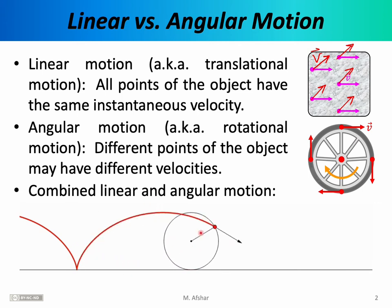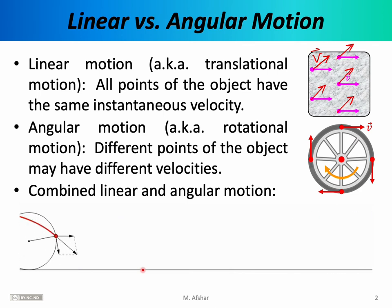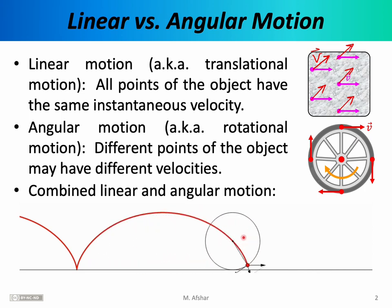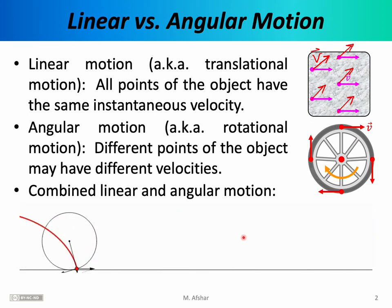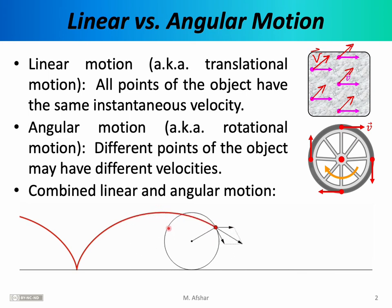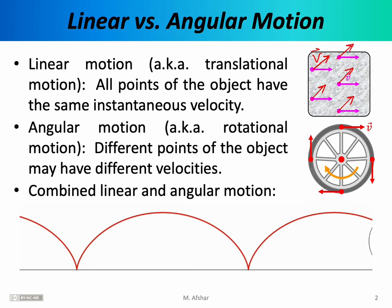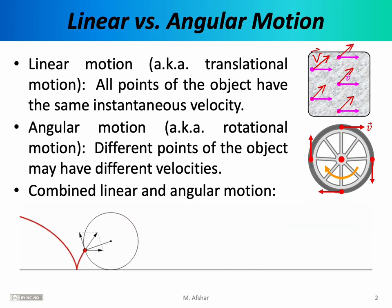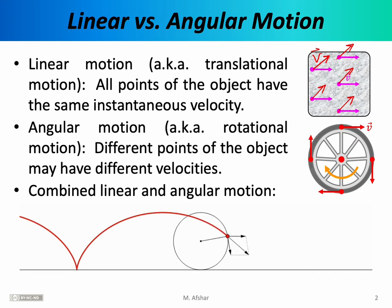To better understand the behavior of the velocity vector, we can decompose it into two components. We can say that the motion of this wheel consists of linear motion, indicated by one vector pointing to the right, and angular or circular motion, indicated by the second vector. The sum of those two gives us the diagonal vector, which is the actual velocity vector of the object. This type of motion can be quite complicated, and our goal in this and the next few lectures is to be able to understand this type of motion quantitatively.